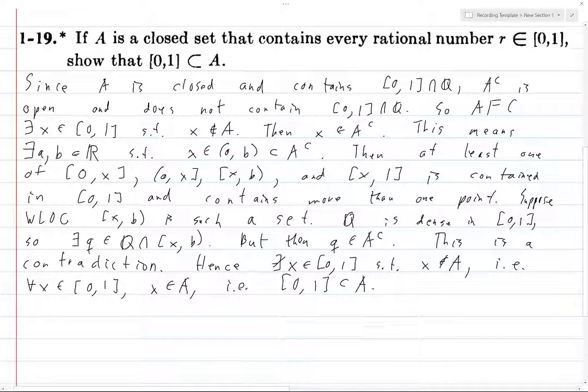But that holds for any irrational number in the interval from 0 to 1. And so therefore, the entire interval from 0 to 1 is contained in A. So that's a much faster proof, but it uses that closed sets contain all of their limit points, which is not something we've covered. But oh well, for now, this proof should suffice.